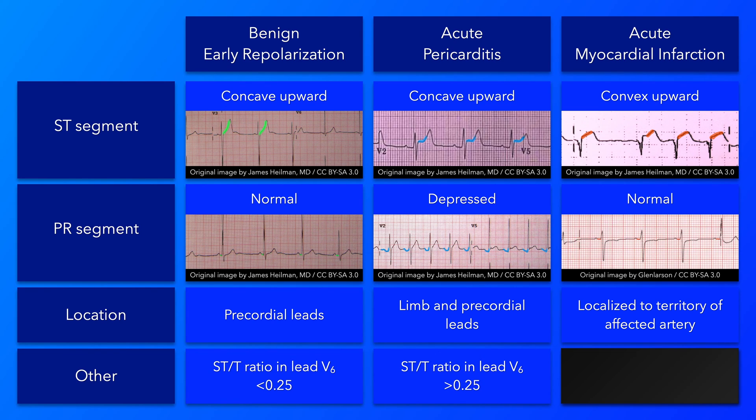Acute pericarditis is more likely than benign early repolarization when the ST elevation to T wave height ratio is greater than 0.25.